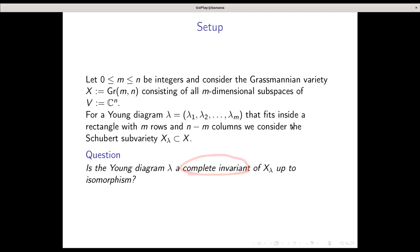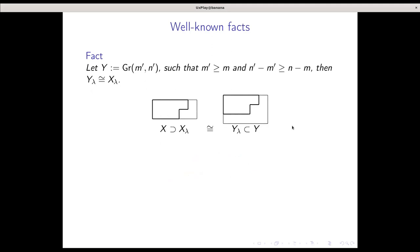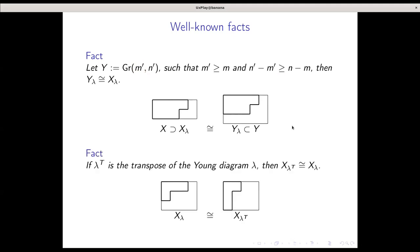By complete invariant, I mean if I pick another diagram, let's say mu, would I get something isomorphic? And if I do get something isomorphic, I want lambda to equal mu. This is not a precise question. This is false for the following well-known facts. First, I can extend my Grassmannian variety. If I take higher dimensional subspaces inside a higher dimensional vector space, then through the same Young diagram, I get isomorphic Schubert variety. The other fact is that if I transpose my Young diagram and it fits inside a rectangle, then I also get an isomorphic Schubert variety. I abuse the fact that I can extend my rectangle as much as I want.